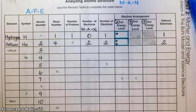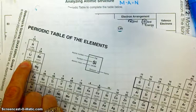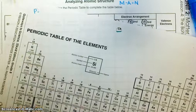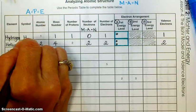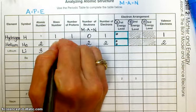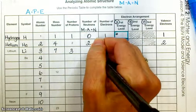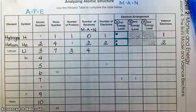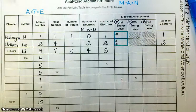Next is lithium, right below hydrogen on the periodic table. Atomic number is three. The atomic mass is 6.941, which rounds to seven for our mass number. Symbol is Li, atomic number three, mass number seven. Protons equals atomic number, so three protons. Neutrons equals mass minus atomic number: 7 minus 3 equals four. Electrons equal three. Now we need to sort those electrons into energy levels.